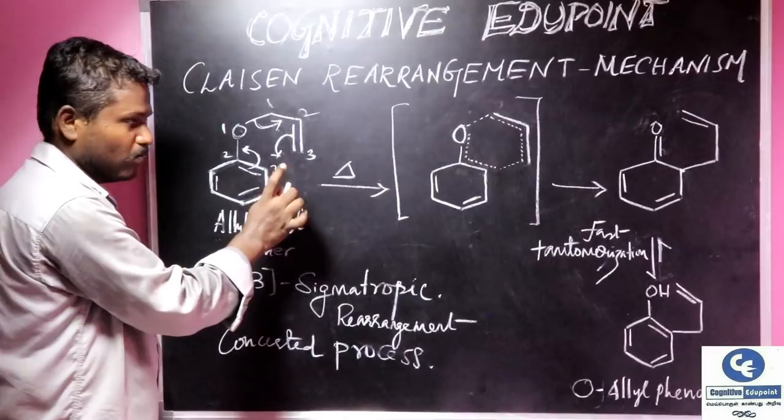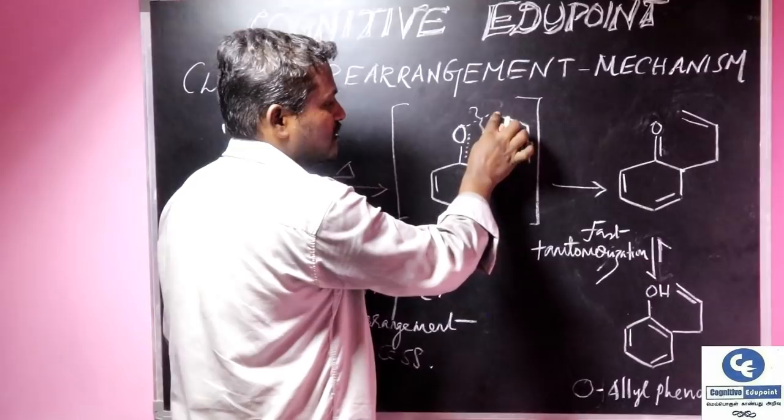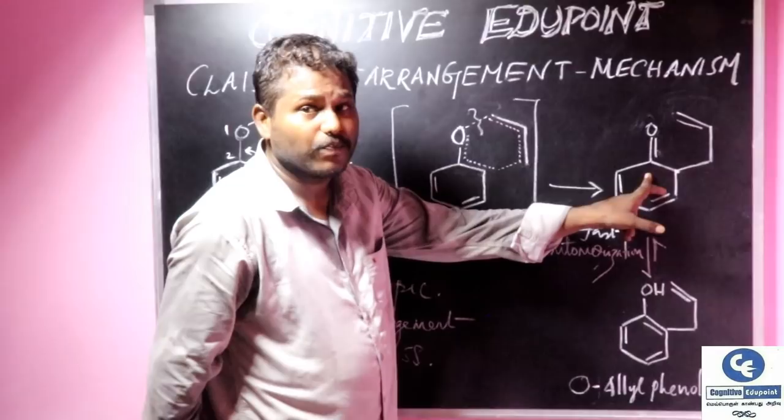This results in a cyclic intermediate, 6-membered cyclic highly stable intermediate. Again, we get the bond breakage between oxygen and carbon and new bond is formed between these two carbons. We get a stable keto form of allyl substituted group.